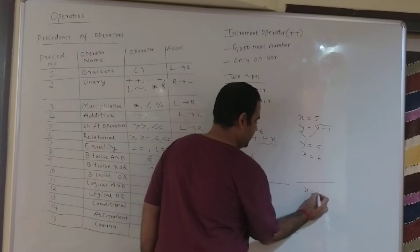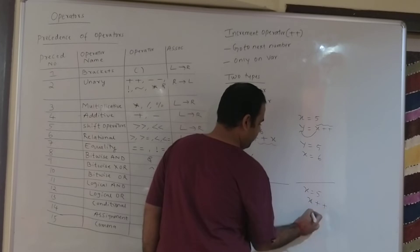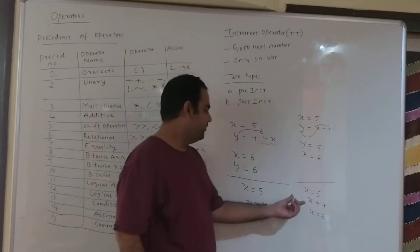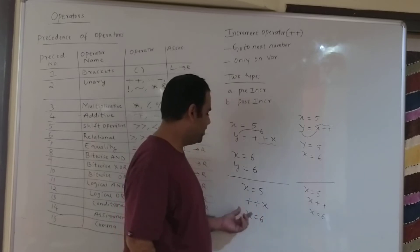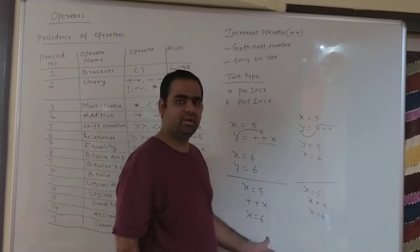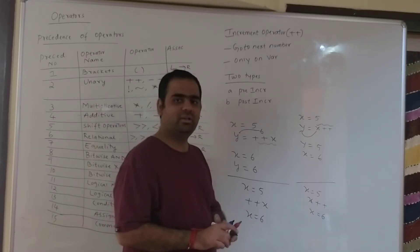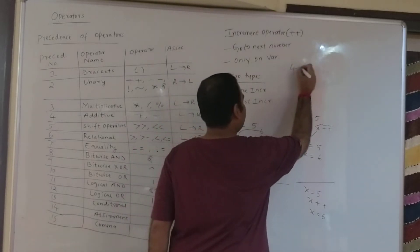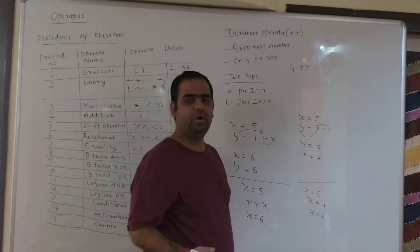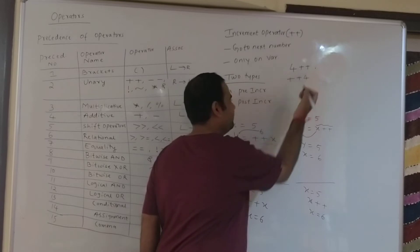In the second example, x is equal to 5 and we write x plus plus — the value of x will become 6. We can observe that if we do not assign the answer to some variable, the final answer remains the same. However, the internal implementation differs, and pre-increment is slightly faster than post-increment. Note that writing 4 plus plus is an error because increment operators cannot be applied on constants. Similarly, plus plus 4 is also an error.